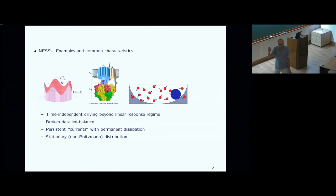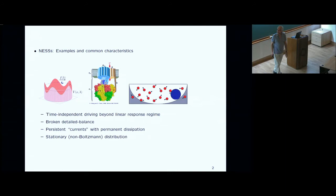Characteristic for non-equilibrium steady states is the fact that there is time-independent driving — or activity, if you want to distinguish those two concepts, which in my opinion you don't really need to. There is time-independent driving beyond linear response, so we are deep in the non-equilibrium realm. Detail balance is broken, which leads to persistent currents with permanent dissipation, and all these systems run into a well-defined steady state, which is of course not given by the Boltzmann distribution.